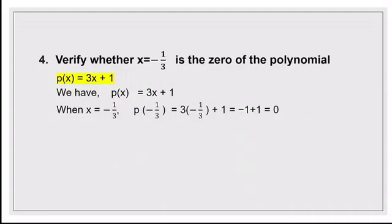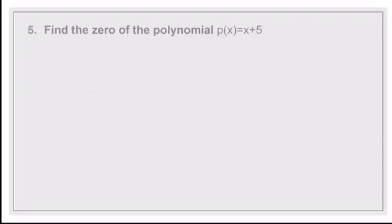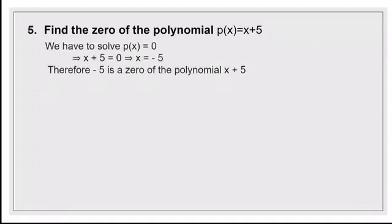Moving on — find the zero of the polynomial p(x) = x + 5. To find the zero of a given polynomial, we equate the polynomial to 0. So p(x) = 0 means x + 5 = 0, which implies x = -5. Therefore, -5 is a zero of the polynomial x + 5. If a polynomial is given and you have to find its zero, first equate the polynomial to 0, then solve for x — that value will be the zero of the polynomial.